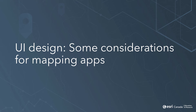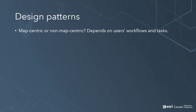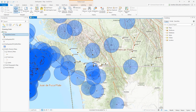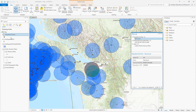When designing and developing mapping apps specifically, here are a few things to keep in mind. We can categorize mapping app interfaces in two ways: map-centric and non-map-centric. Map-centric design is what you'd see in a program like ArcGIS Pro, the ArcGIS Online Map Viewer, or ArcGIS Field Maps on mobile. With this, the map is front and center for everything you do with the app, whether that's editing data, changing symbology, or running an analysis tool.